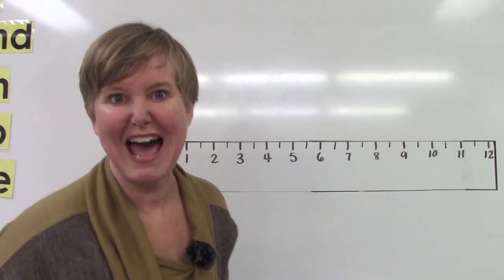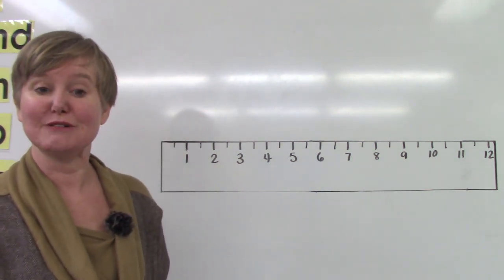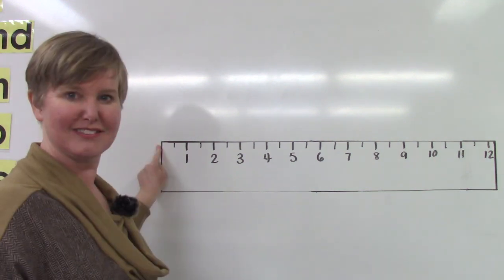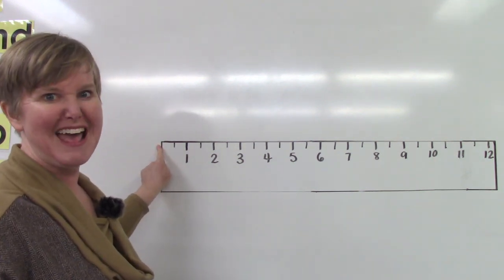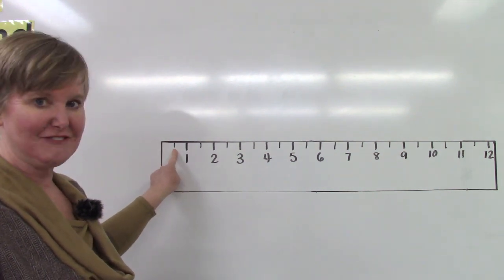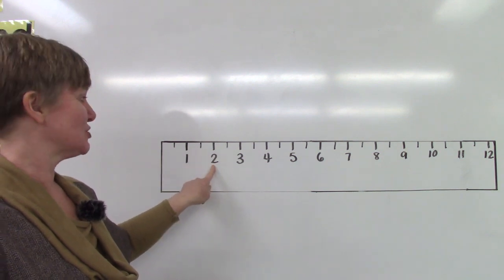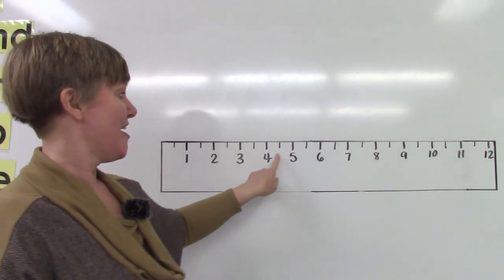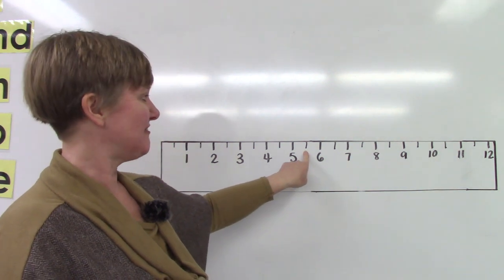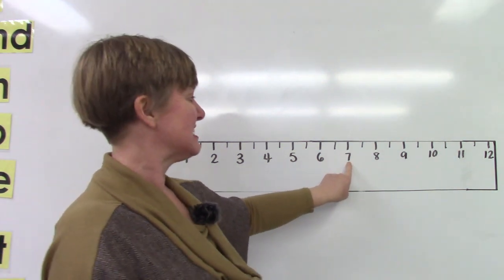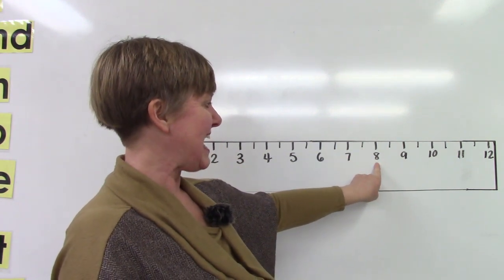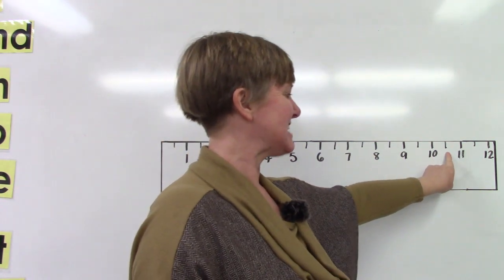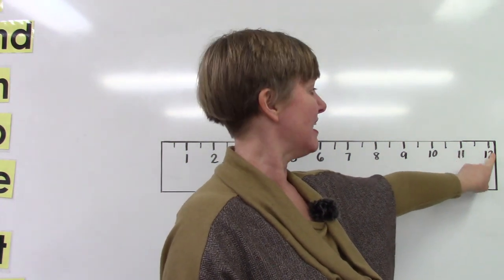Now I want you to count with me. Before when we were counting inches we were just counting one, two, three, four, but this time I want us to count the halves as well. We're going to start right here at zero and we're gonna start by counting half. Half, one, one and a half, two, two and a half, three, three and a half, four, four and a half, five, five and a half, six, six and a half, seven, seven and a half, eight, eight and a half, nine, nine and a half, ten, ten and a half, eleven, eleven and a half and then twelve.